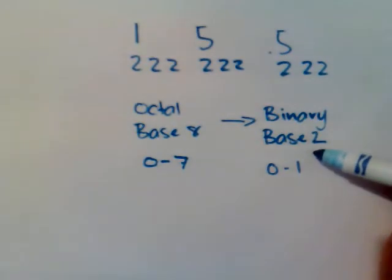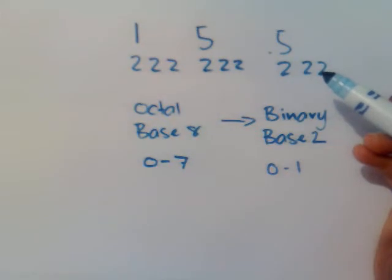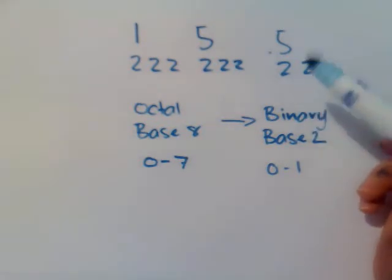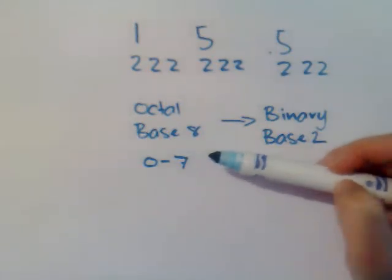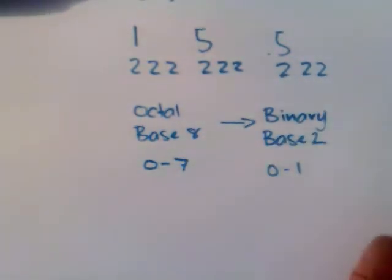So this is where the twos fit in. Binary is base 2, so that's why we're using twos here. But the reason you need three of them is because you need to be able to represent the highest number in the octal system, which is 7.